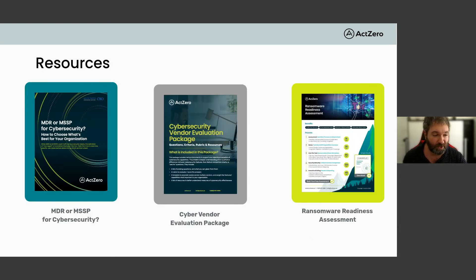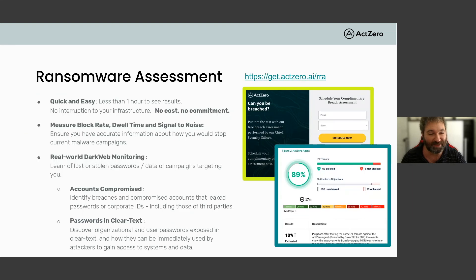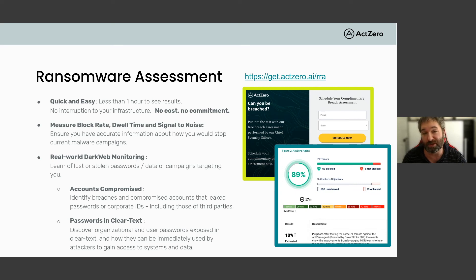For more information, we have a few resources available. There is a white paper on MDR or MSSP for cybersecurity. We also have the Cyber Vendor Evaluation Package, and the Ransomware Readiness Assessment — this involves seeing where you stack up, with us and without us. It's an evaluation tool that's quick, easy, and there's no cost or commitment. We'll measure things like the blocking rate, the dwell time of how long an attacker could potentially stay in your network undetected, the signal-to-noise ratio, and we'll examine the dark web — letting you know what accounts or corporate IDs are compromised and any passwords that are clear text.